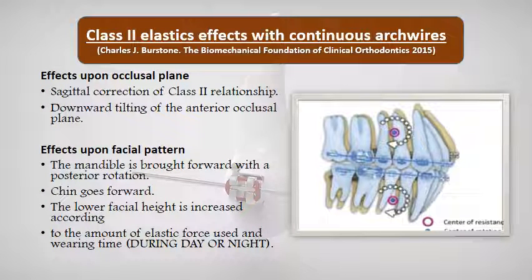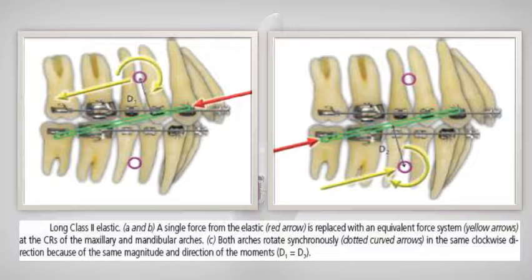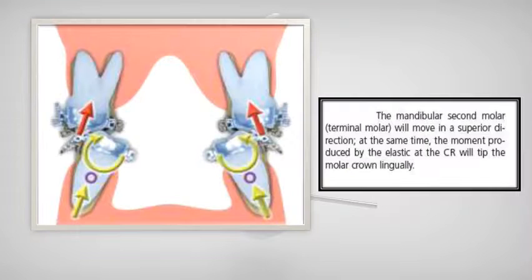Effects upon the occlusal plane include correction of Class 2 relationship and downward tilting of the anterior occlusal plane. Effects upon facial pattern: the mandible is brought forward with posterior rotation, the chin goes forward, and lower facial height is increased, according to the amount of elastic force used and wearing time, either during day or night or both.